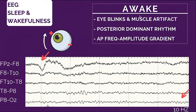Now that we know how to identify eye blinks and muscle artifact, we need to discuss the posterior dominant rhythm and the anterior-posterior gradient. The next slide will focus on the PDR.